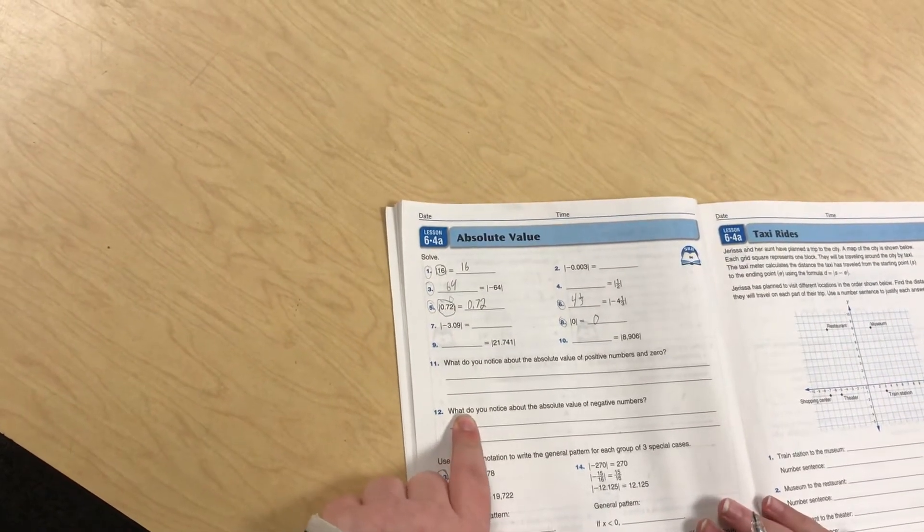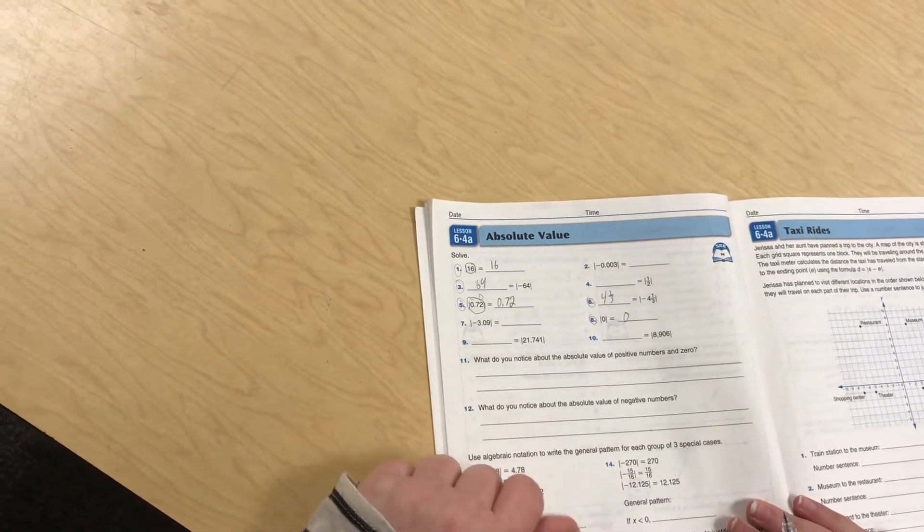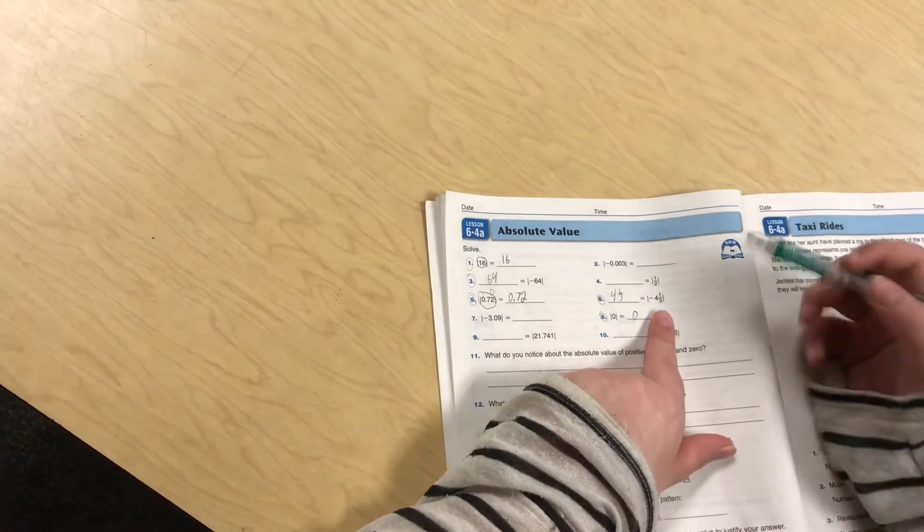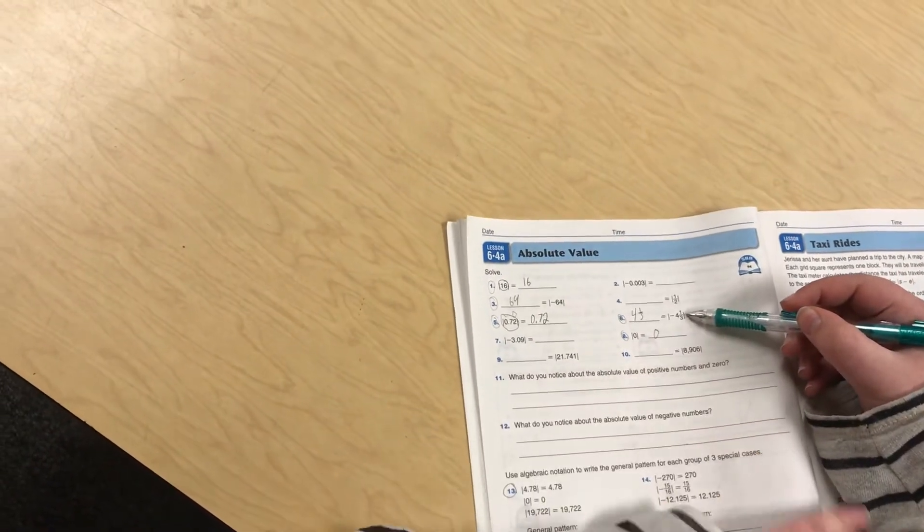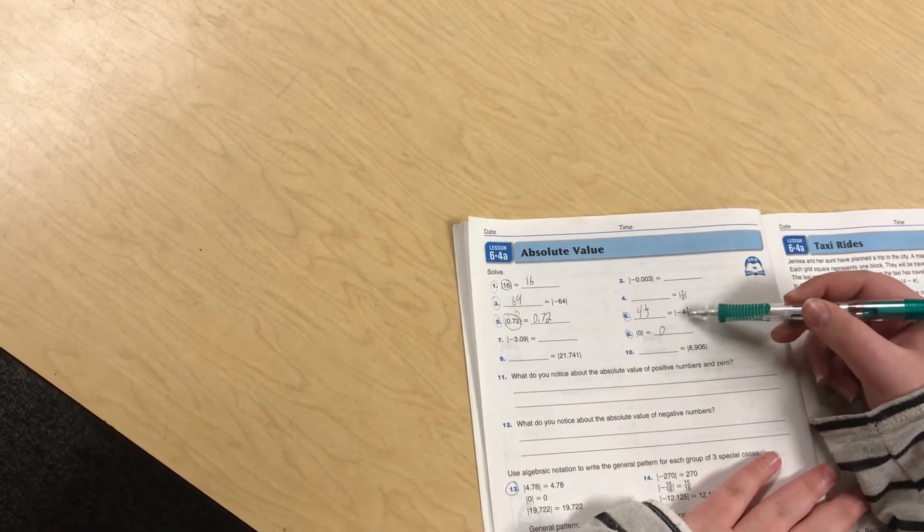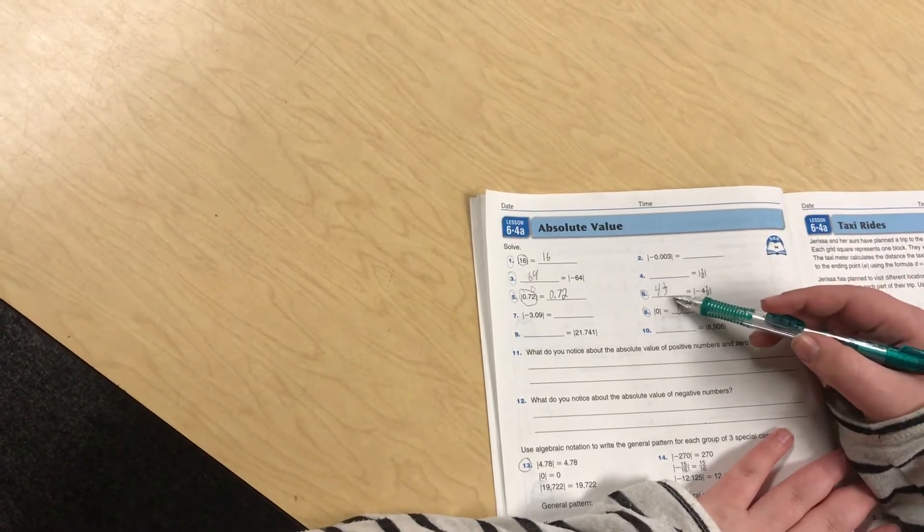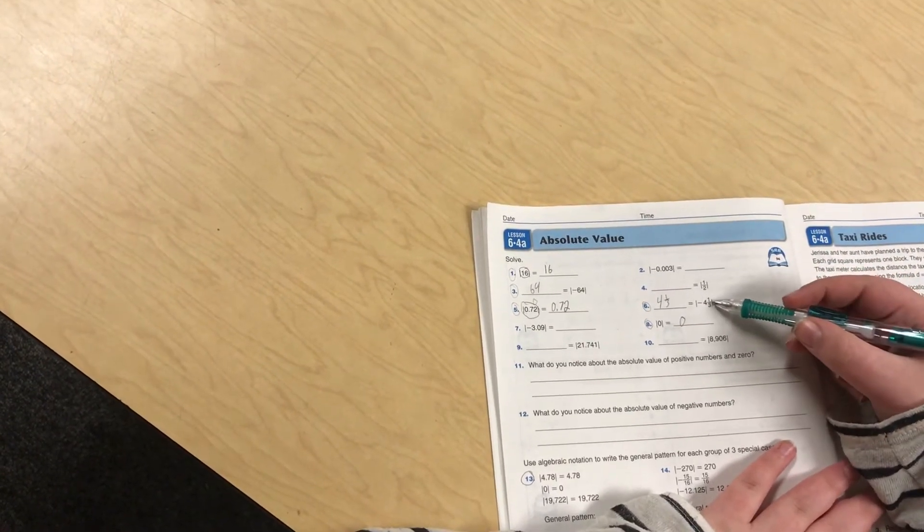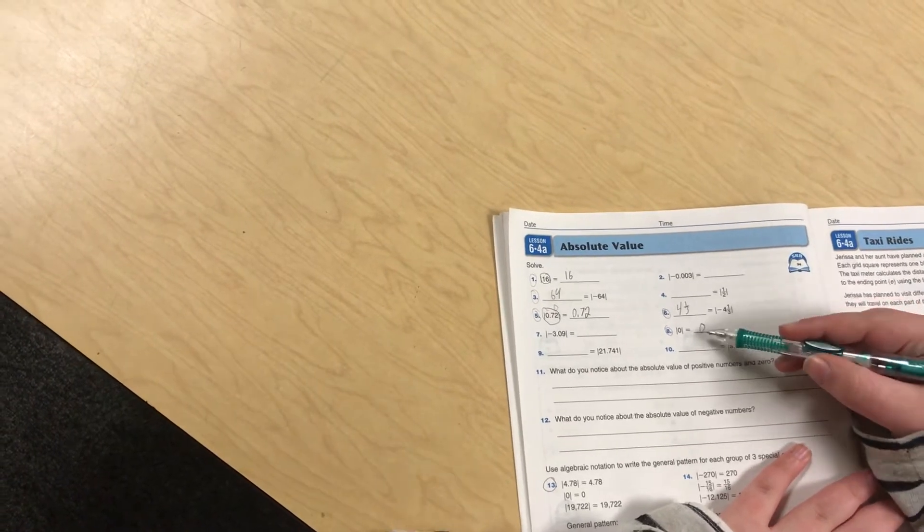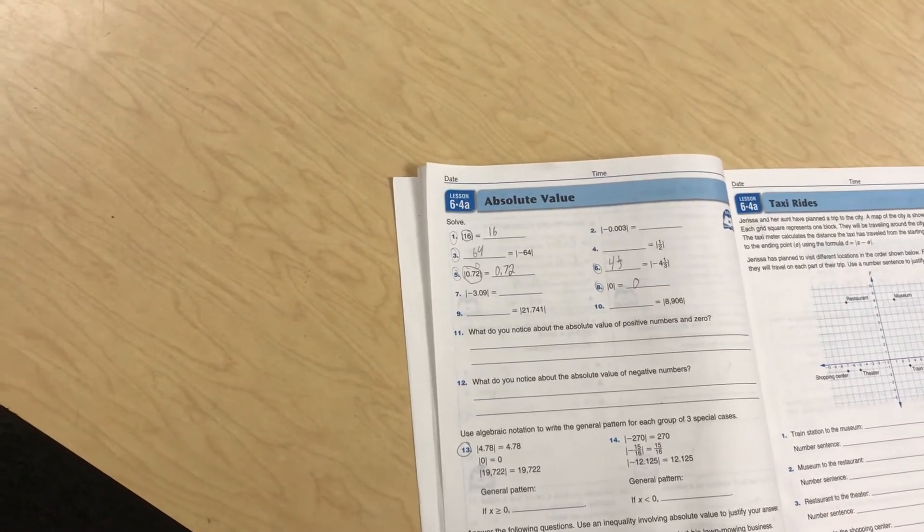And how do you notice the absolute values of negative numbers? Take this one, for example. So you take 4 and 1 third, which the absolute value of it is negative 4 and 1 third. The absolute value of it is 4 and 1 third, because that's how far away it is from 0. So the absolute value of negative numbers is just the opposite of that number. Yes.